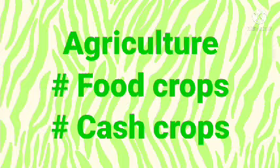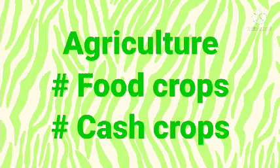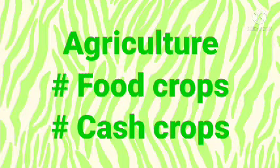Cash crops are those crops which are grown to sell for profit. Crops can also be categorized into plantation crops and horticulture crops. Tea and coffee are plantation crops. Fruits such as mangoes and apples, and vegetables such as okra (ladyfinger), potato, and cauliflower are horticulture crops. Horticulture means the art or practice of garden cultivation.